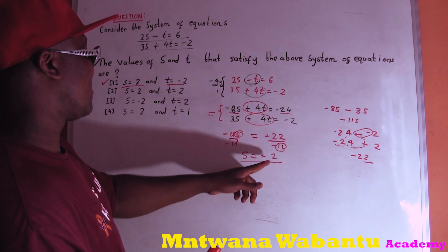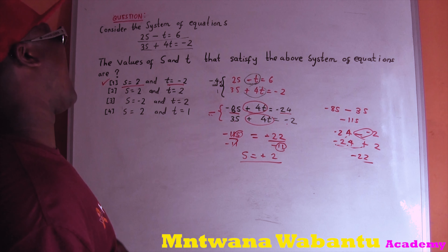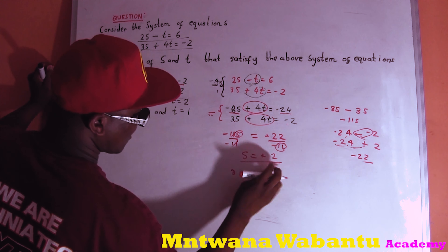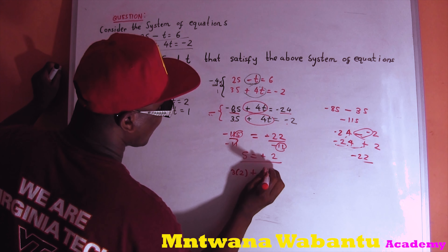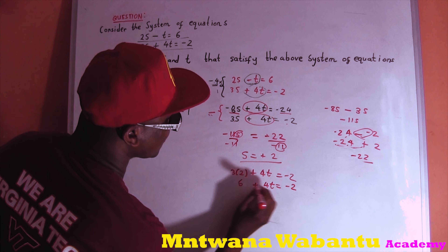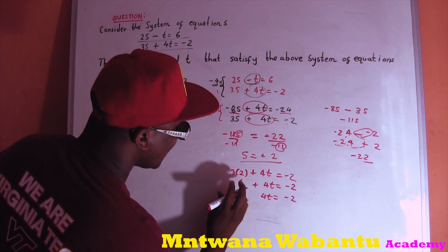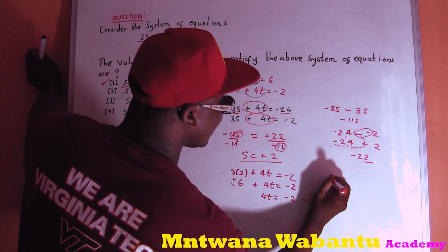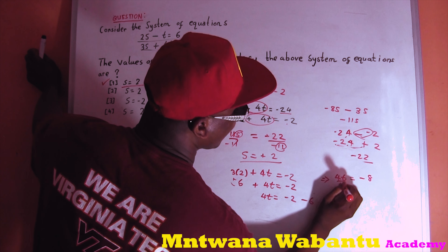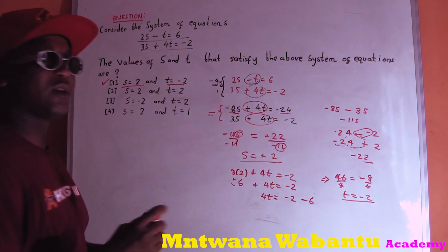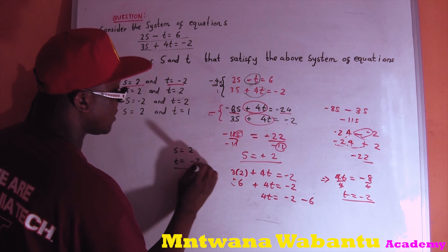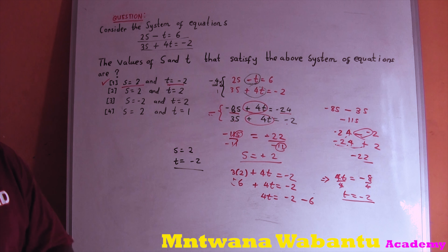Since s equals 2, substitute into the second equation: 3 times 2 plus 4t equals negative 2, which gives 6 plus 4t equals negative 2. So 4t equals negative 2 minus 6, which is negative 8. Divide by 4: t equals negative 2. Same answer again — s equals 2 and t equals negative 2.